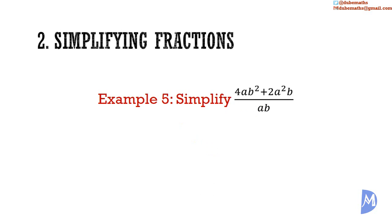Example 5. Simplify: (4ab squared plus 2a squared b) over ab. Recognizing that the numerator can be factorized by HCF — the HCF of 4ab squared and 2a squared b is 2ab. We multiply 2ab by 2b to get the first term back, and by positive a to get the second term. The a's and b's cancel to remain with 2 multiplied by (2b plus a).